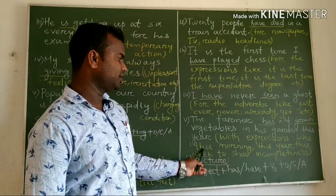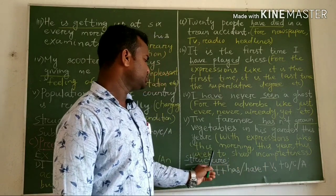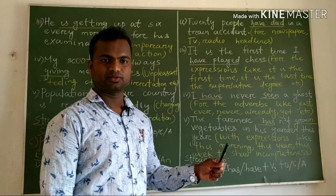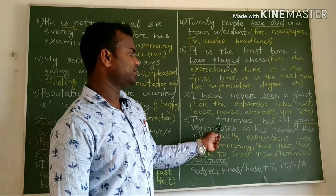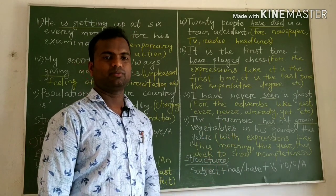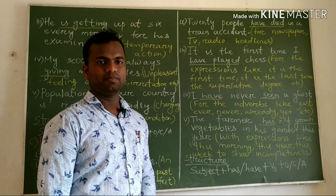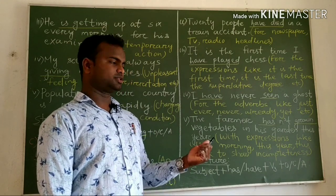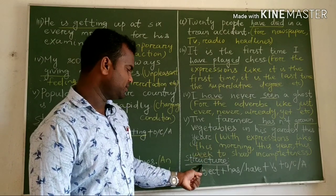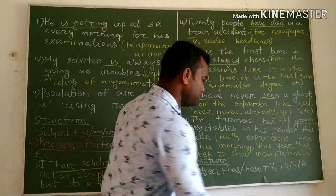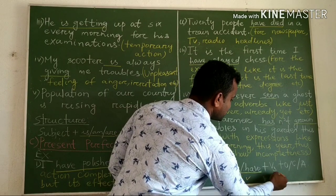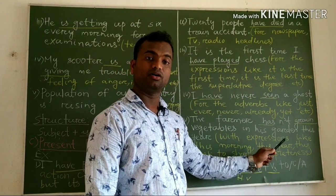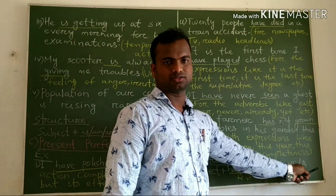Present perfect is also used with time expressions showing incompleteness, such as: this morning, this year, this week, this afternoon. Example: The farmer has not grown vegetables in his garden this year. The structure uses have/has plus the past participle form of the verb — for example, go, went, gone (third form).